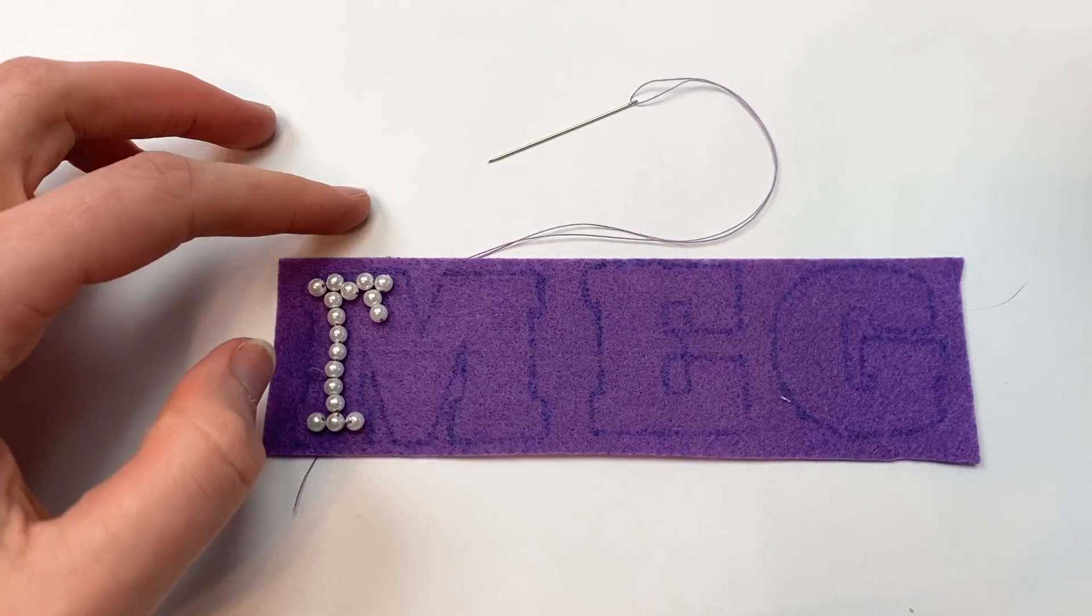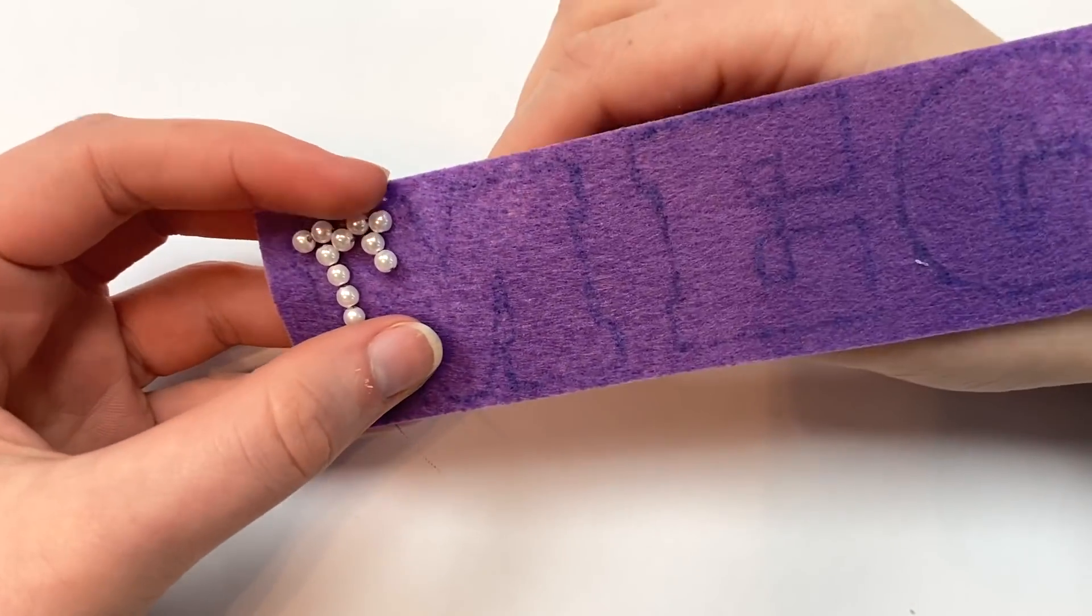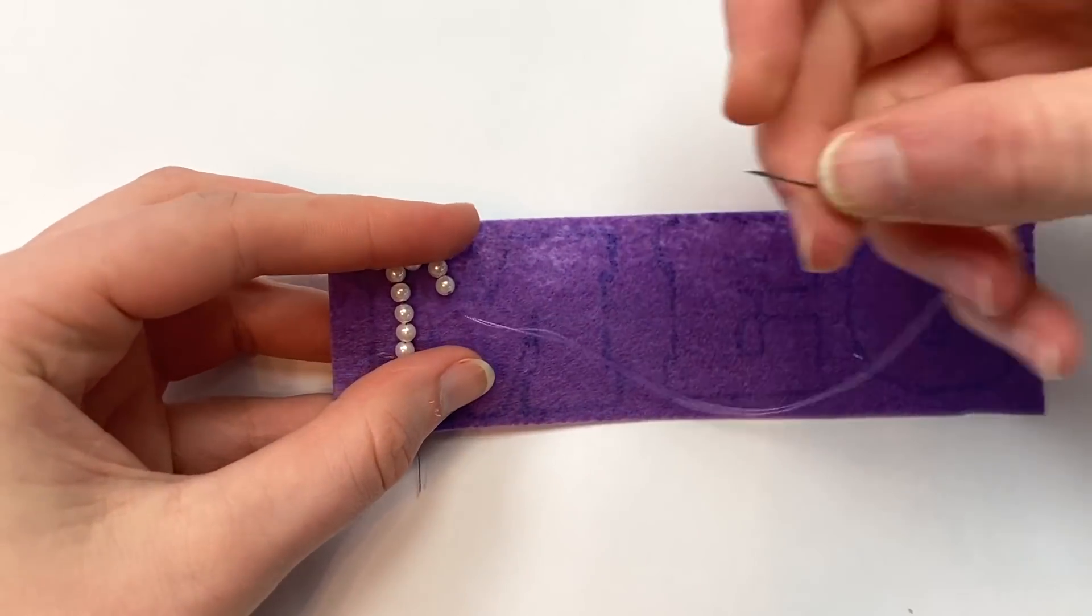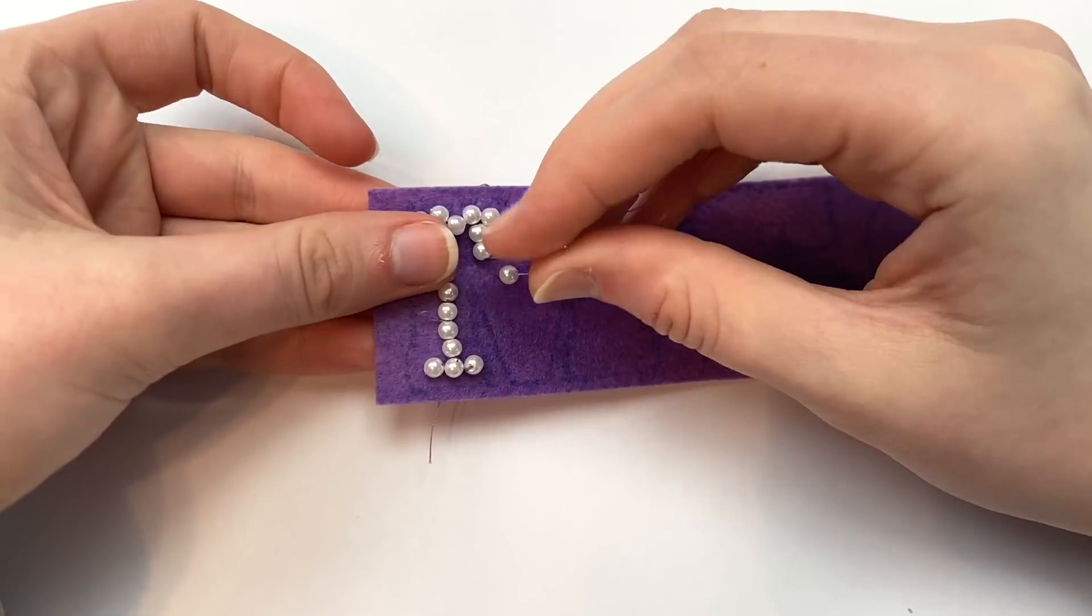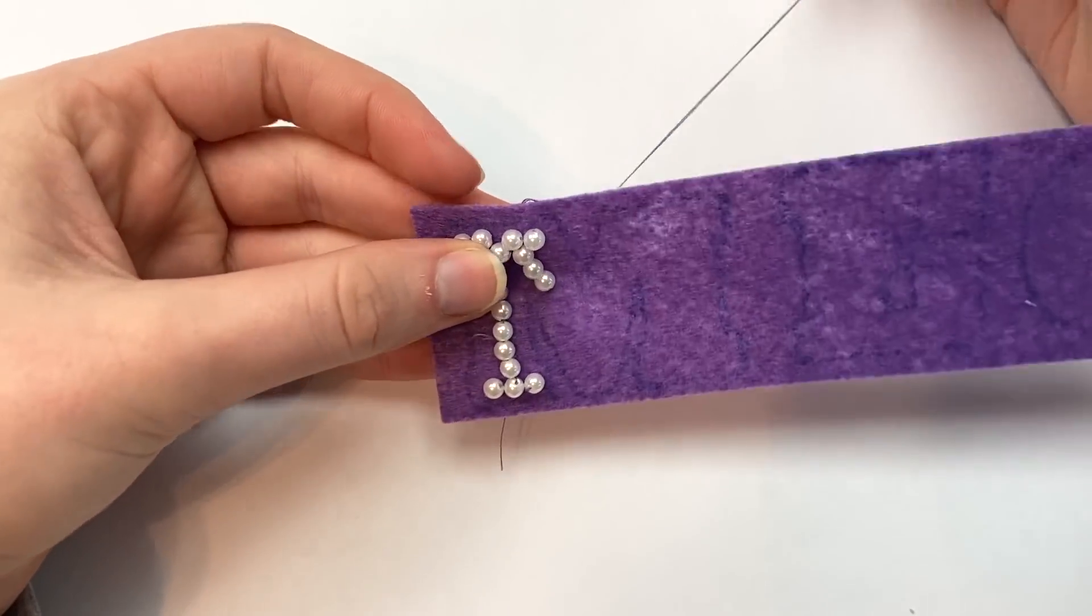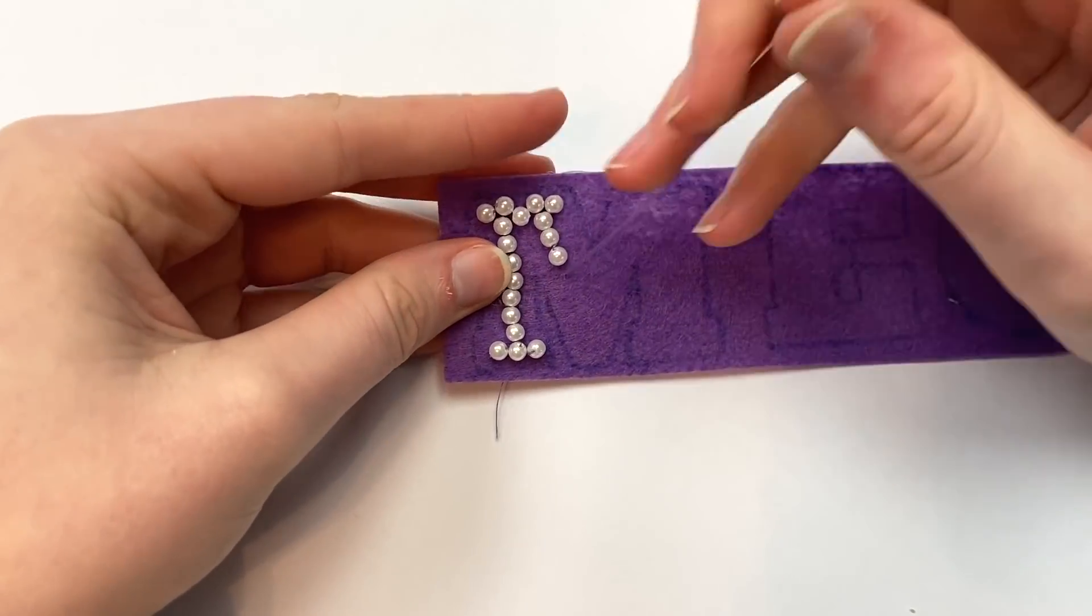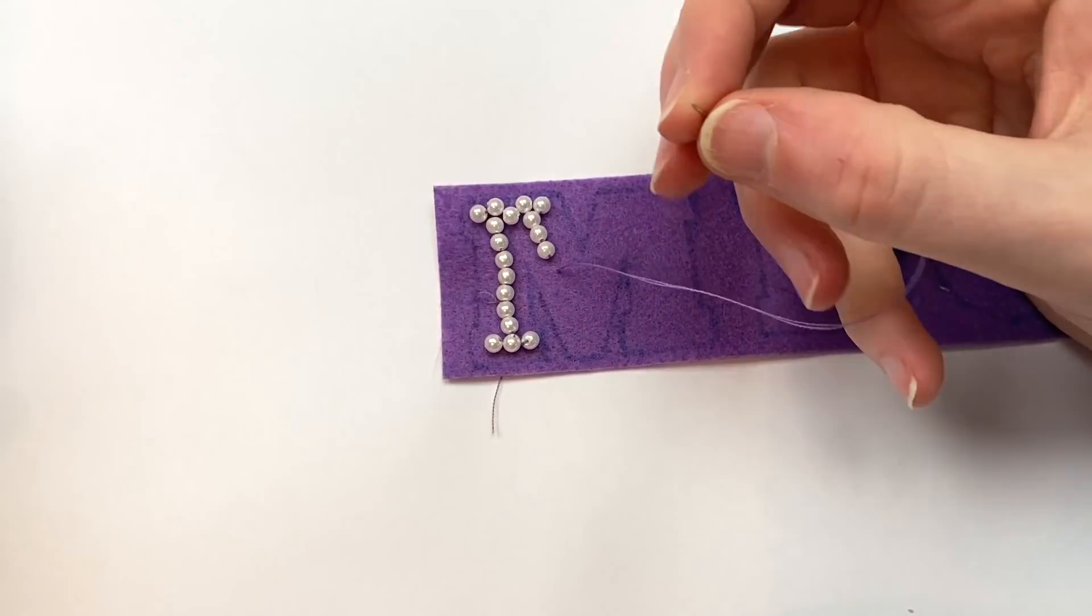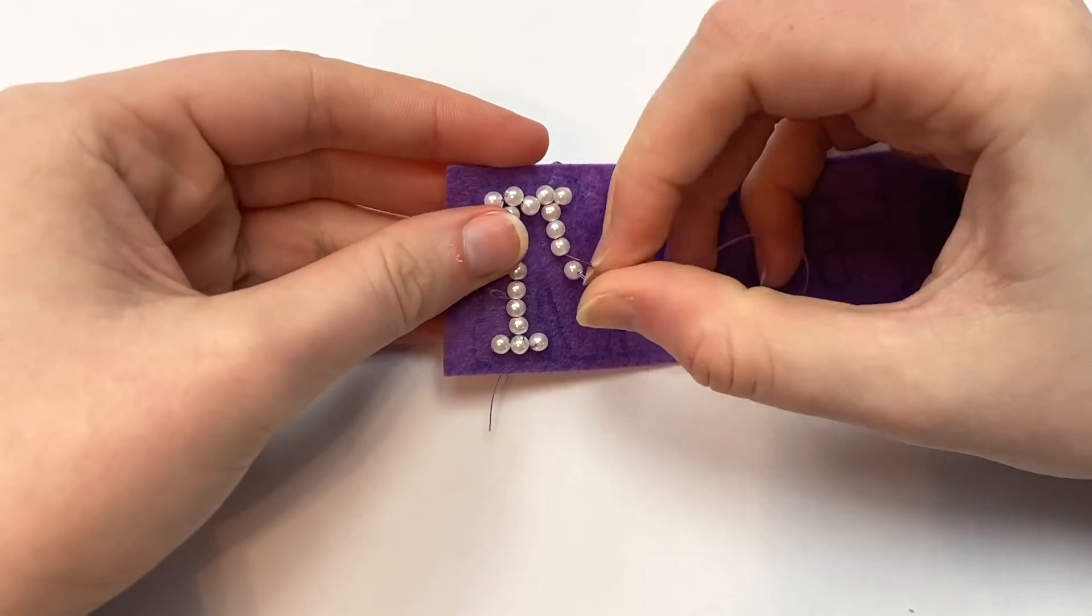I traced around the letters using a fabric marker, cut them out, then started sewing all my beads. There are two different ways that you can do this. One option is to sew the beads on using a back stitch. For this method you bring your needle up to the front of the felt, slide on a bead, and bring the needle back down through the felt to secure it. For the next bead, you bring your needle up through the felt again, leaving a little bit of space between it and the bead that you just sewed on, slide on another bead, and bring your needle back down right next to the first bead.